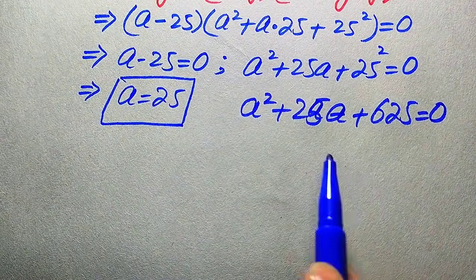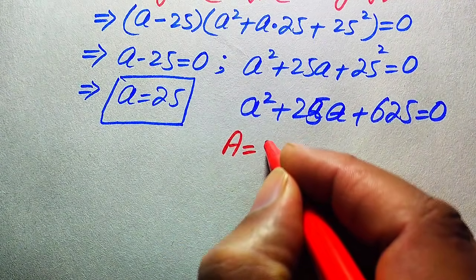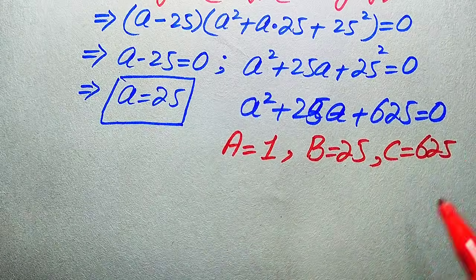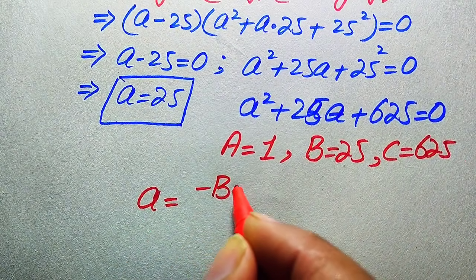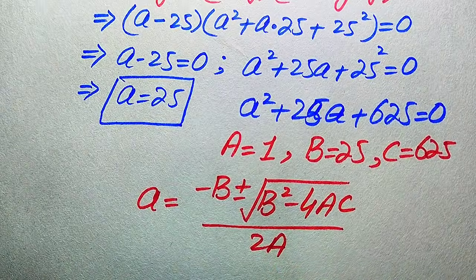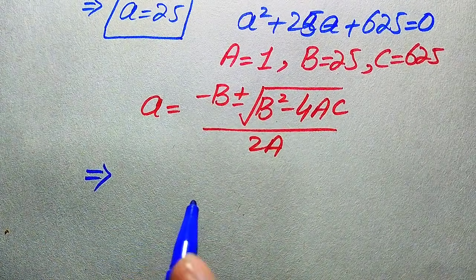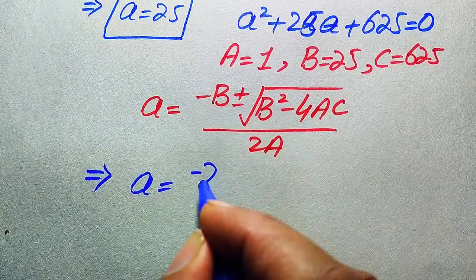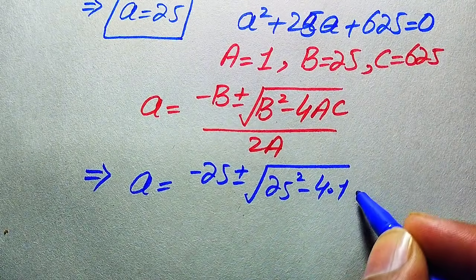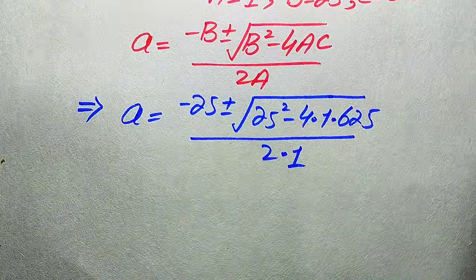To find the other roots we solve the quadratic equation a² plus 25a plus 625 equals zero using the quadratic formula. The coefficients are: a = 1, b = 25, and c = 625. The quadratic formula is: minus b plus or minus square root of b² minus 4ac, divided by 2a. Substituting the values gives minus 25 plus or minus square root of 25² minus 4 times 1 times 625, divided by 2.